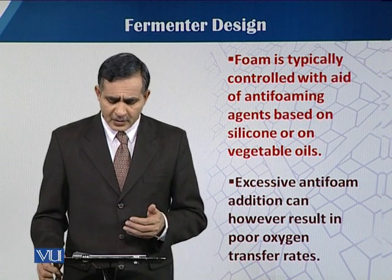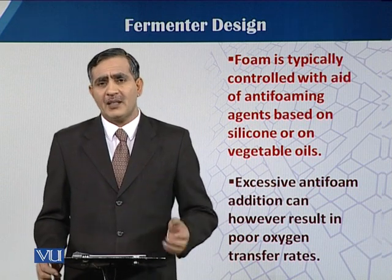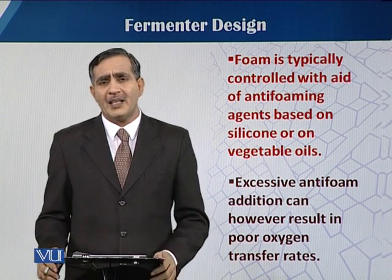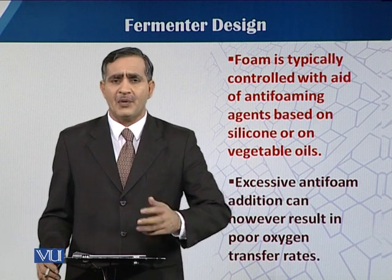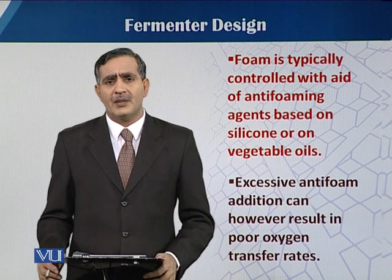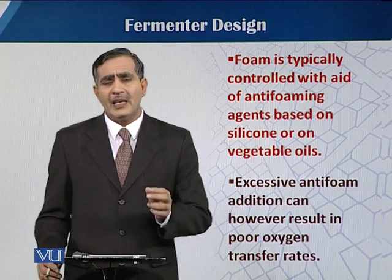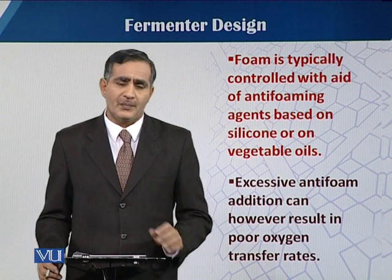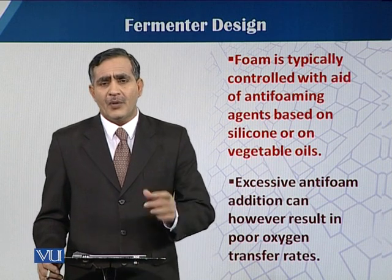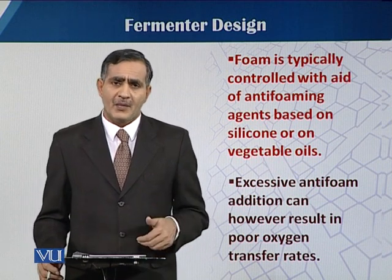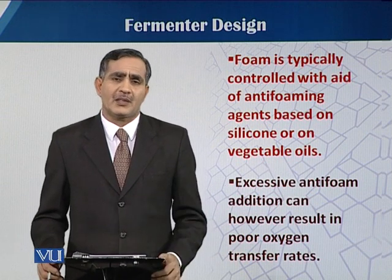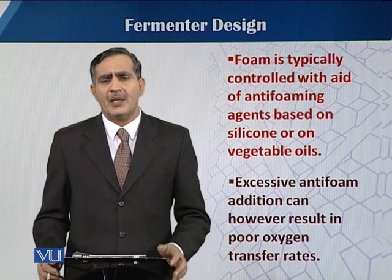The foam can be controlled by the addition of some chemicals. These chemicals have two types of nature: one has anti-foaming properties and the other has defoamer properties. Anti-foams hinder the production of foam and are added before the formation of foam. When foam has already been produced, we can add defoamers. Commonly, the word anti-foam is used for both.